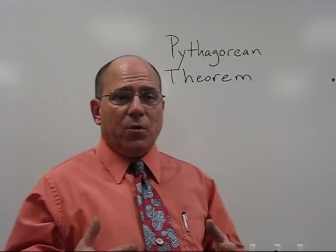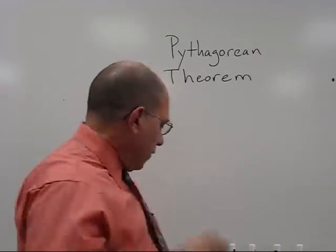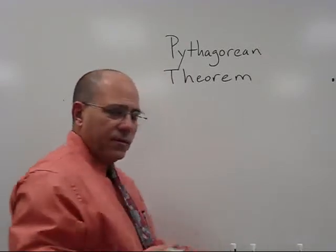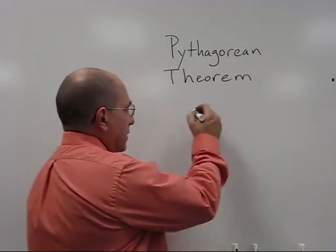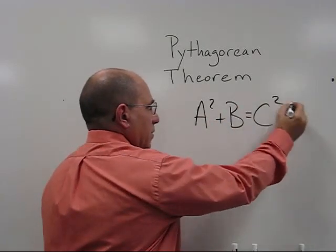All it is is the way we use to find the length of the sides of a right triangle. The formula we use goes like this: A squared plus B squared equals C squared.